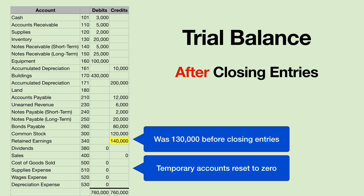Here is what a trial balance looks like after closing entries — they call this a post-closing trial balance, with 'post' meaning after. Notice all the accounts starting with dividends: the dividends, revenue, and expense accounts at the bottom are all reset to zero by moving their balances to the retained earnings account at the end of the year.